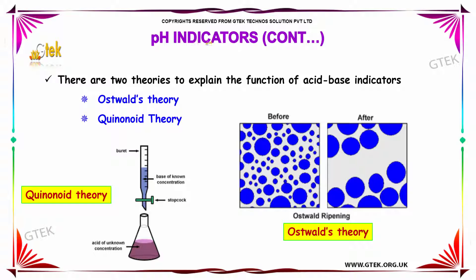Let's move on to pH indicators further. There are two theories to explain the function of acid-base indicators: one is Oswald's theory and the other one is quinonoid theory.